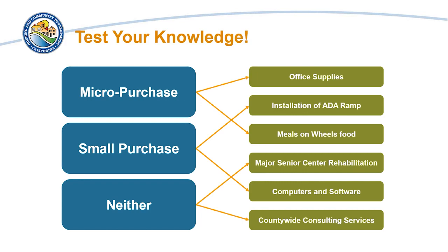The selection of a construction contractor to rehabilitate a senior center where the contract amount exceeds $250,000 must be procured using the sealed bid method. Likewise, a countywide consultant contract expected to cost more than $250,000 — even if the CDBG-CV share is less than $250,000 — must be procured using the competitive proposals method, most often through a request for proposals.